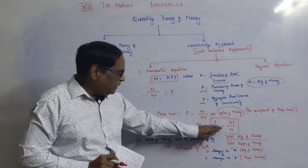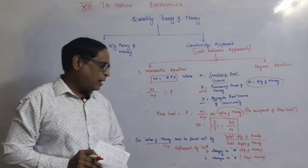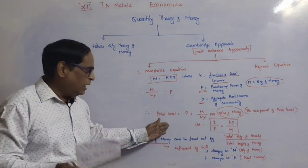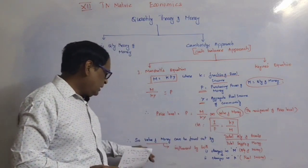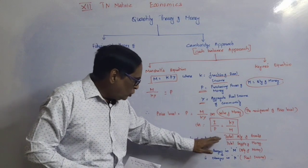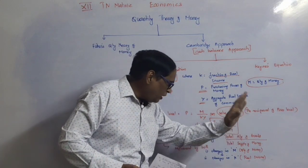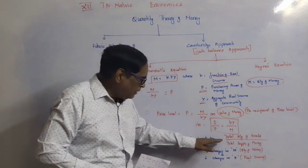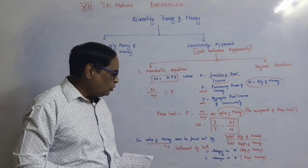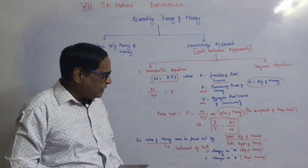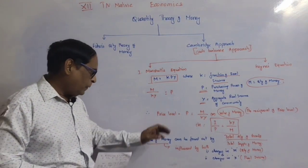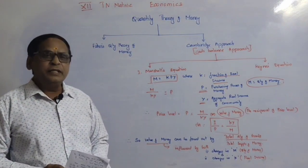1 divided by P equals KY divided by M. That is the value of money. The value of money can be found out by the total quantity of goods and services divided by the total supply of money.